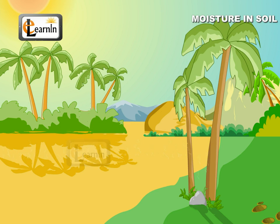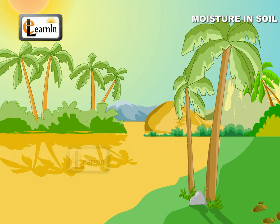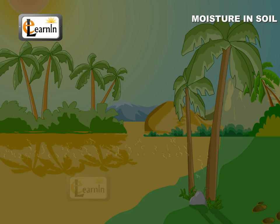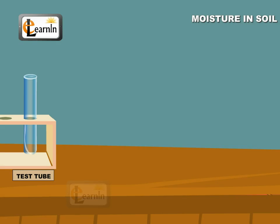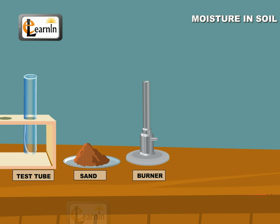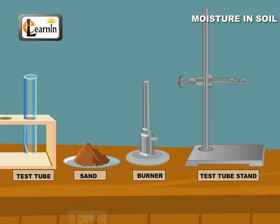Let us understand this clearly with the help of an experiment. For this experiment, we need a test tube, two spoons of sand, a burner and a test tube stand.